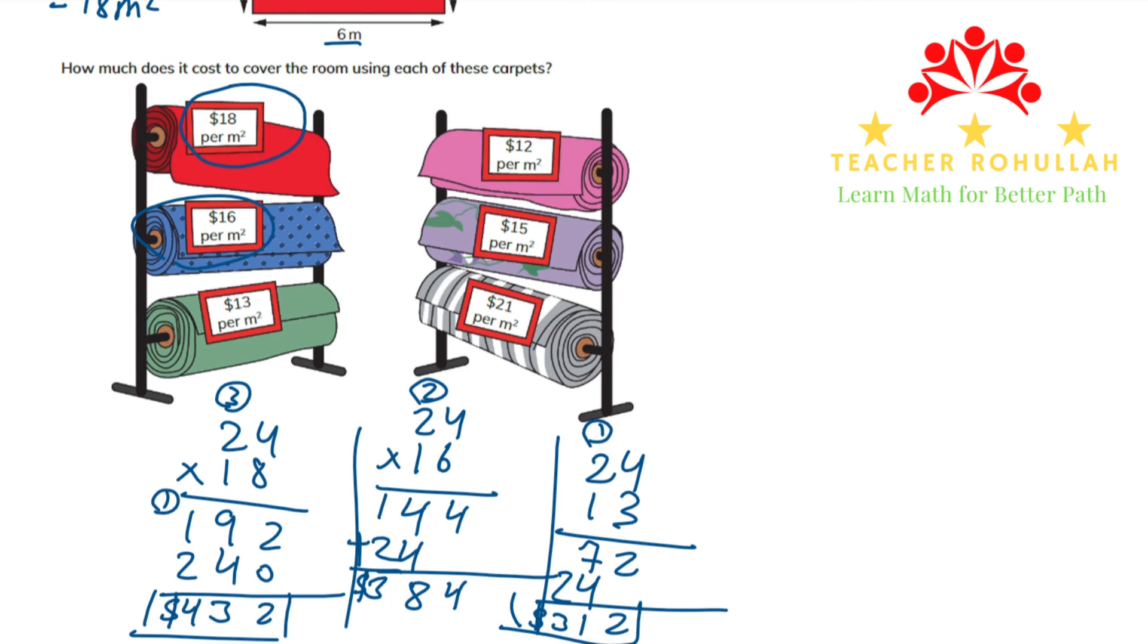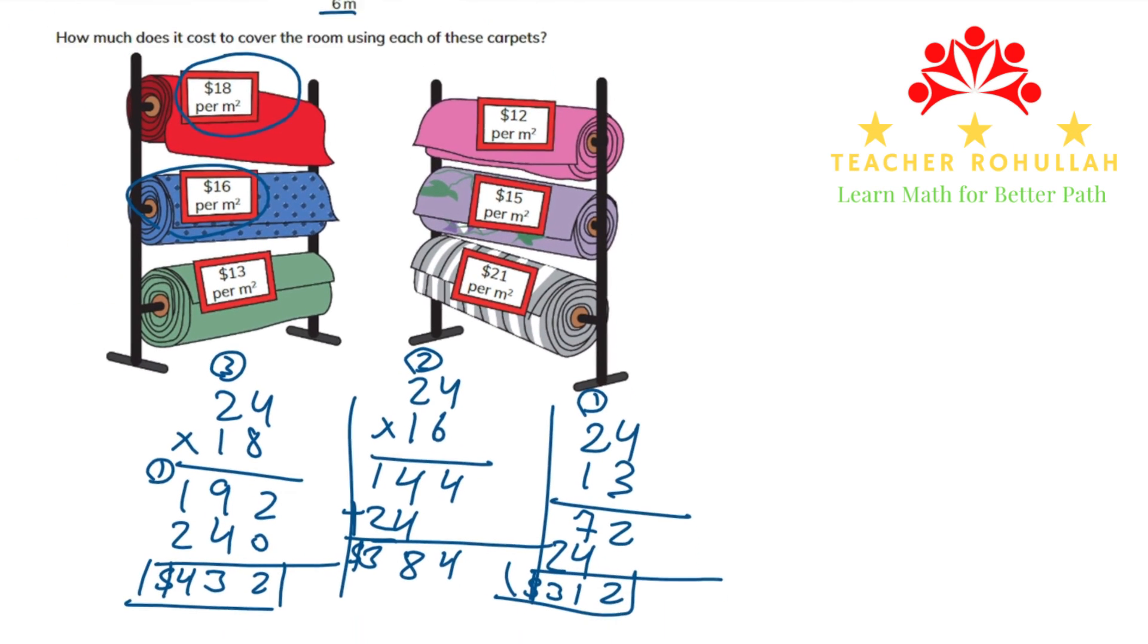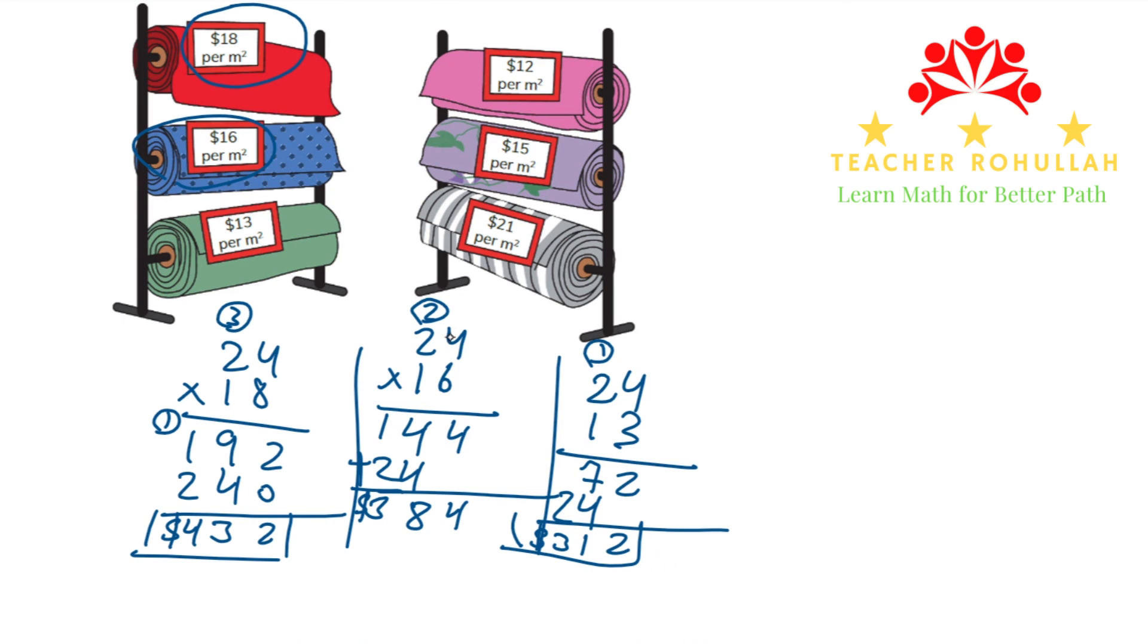Now that you understood how to find the price of each carpet for that room that is 24 square meters, or the area of the room is 24 square meters, you can use multiplication to find out how much each of the carpets cost for that room.